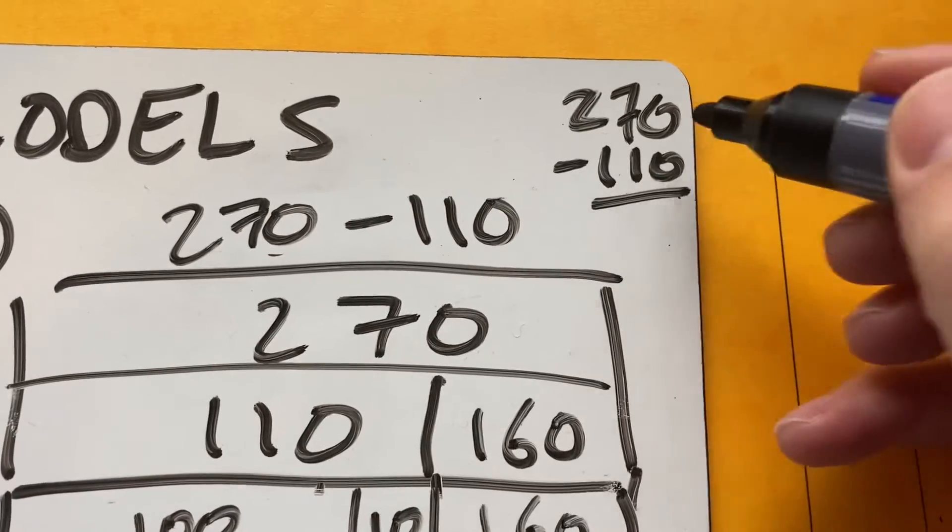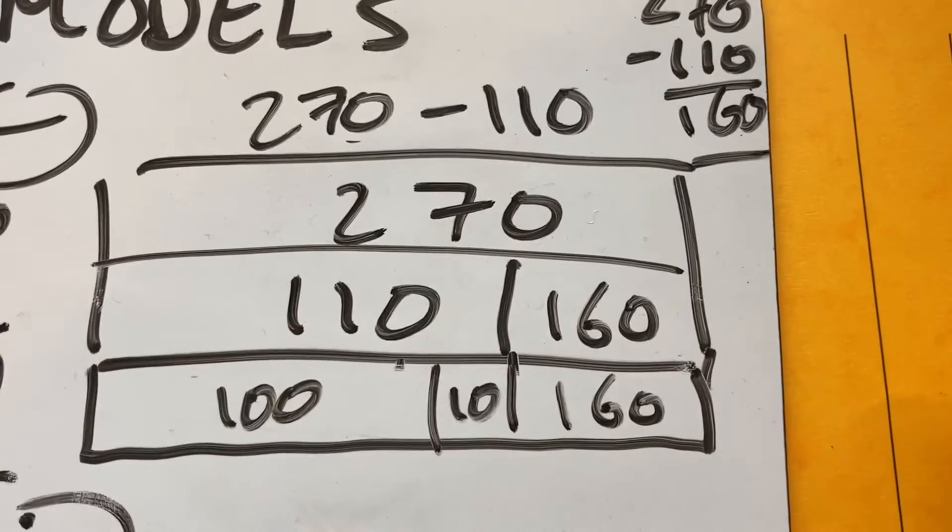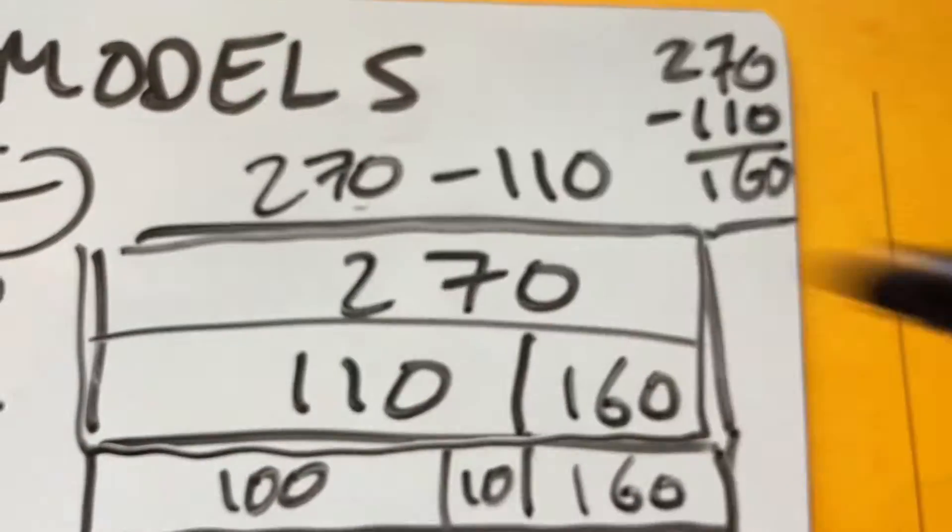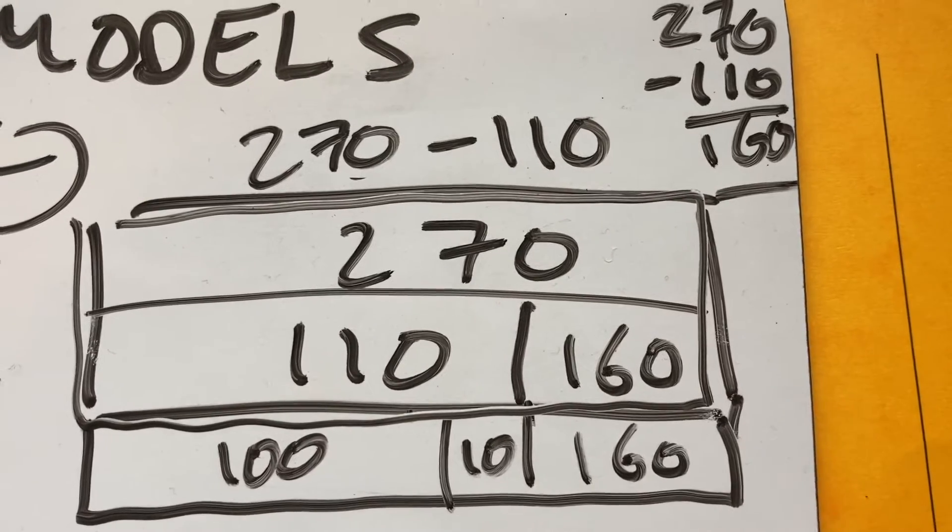And I could compare that to column subtraction. 7 minus 1 is 6, 2 minus 1, and I get 160. And then I've got my nice bar model representation of that subtraction to see how these two parts add up to that one.